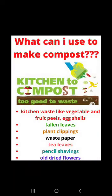So what can I use to make compost? You may be wondering how to make it — what do we need? First, we use our kitchen waste. 'Kitchen to compost — kitchen waste is too good to waste.' Kitchen waste such as vegetable and fruit peels and egg shells — sabzi ke chilke, fruit ke chilke, aur egg ke shells — these can all be used to make compost.